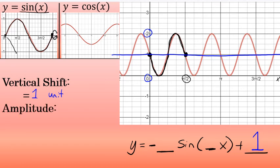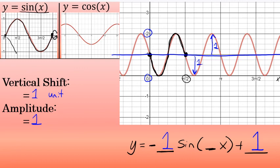Next, the amplitude. From the vertical center at y equals 1 to the high point is just 1 unit, and from that center to the low point is also just 1 unit. So the amplitude is 1, and the value of a is 1. This equation will be y equals negative 1 times the sine of something times x — though I won't write the 1 in the final answer.